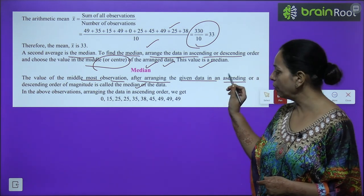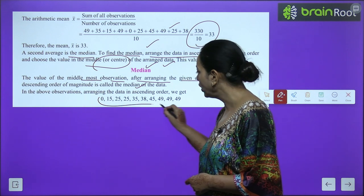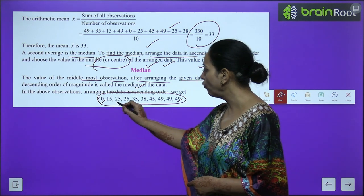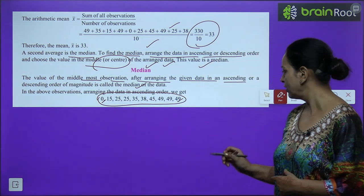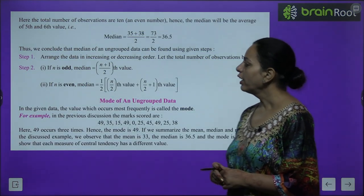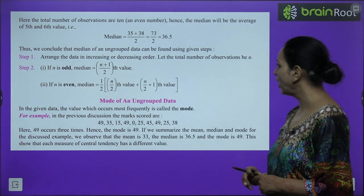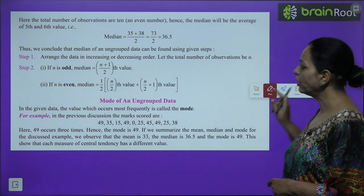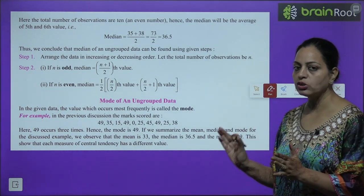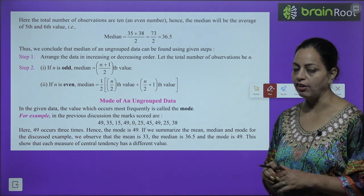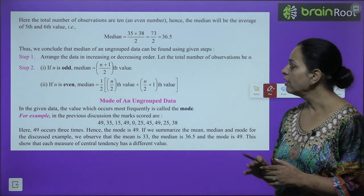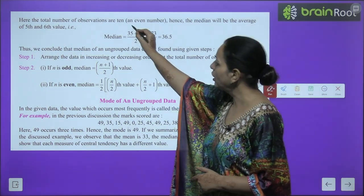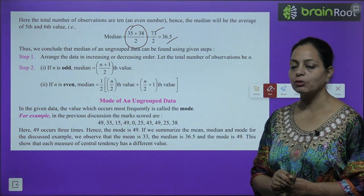The marks were arranged in increasing order: smallest is 0, highest is 49 — so 0, 15, 25, 25 and so on. The total number of observations is 10. Since we cannot find a single center value for 10 observations, we take the average of the 5th and 6th values. Those two center values give us 36.5, so the median is 36.5.